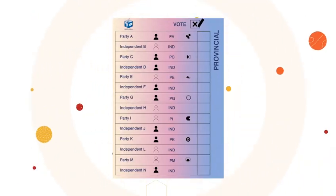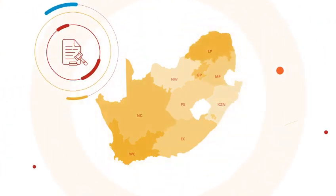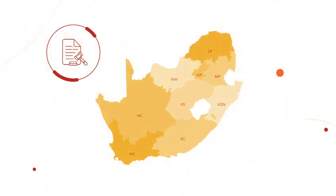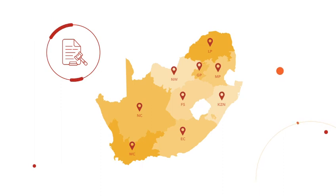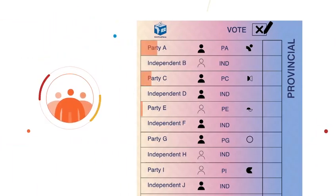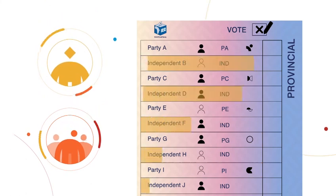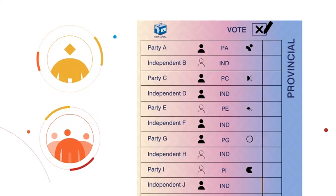Ballot number three is the provincial ballot for the provincial legislature, which makes the laws for each province. Here, you will find political parties and independents on your ballot.